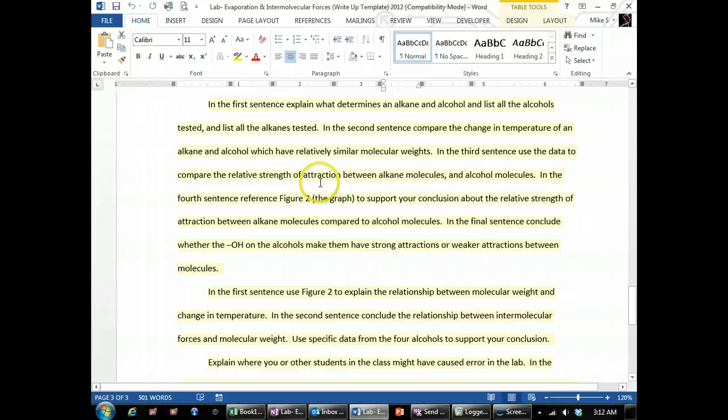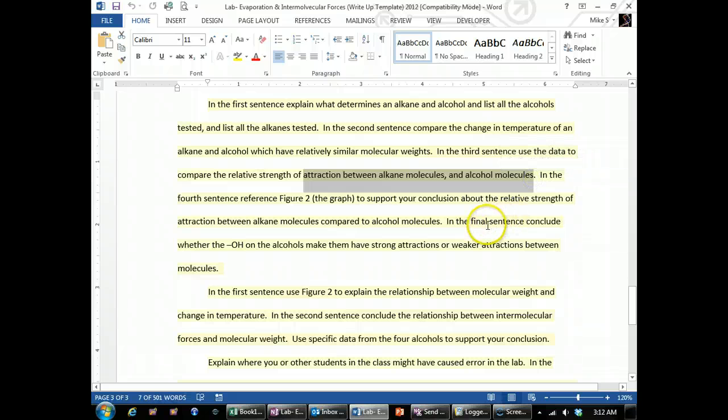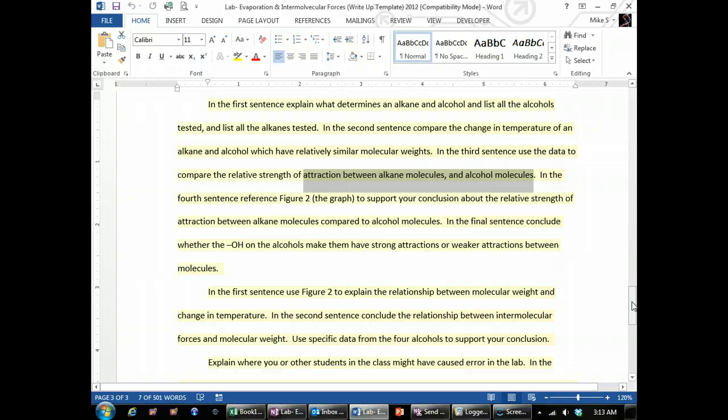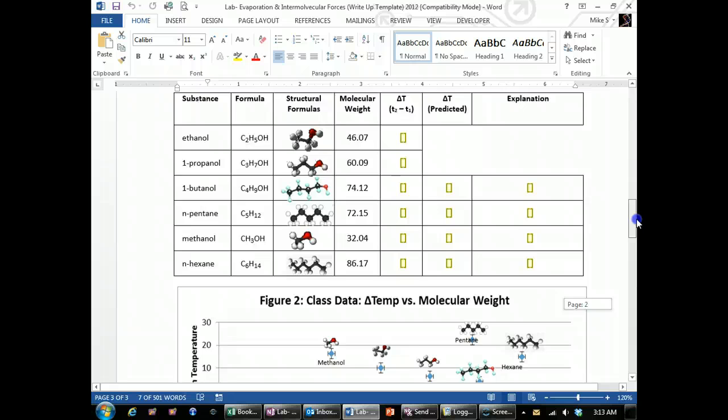Then in the third sentence, that's where you compare the attraction between alkanes and alcohols and reference what the molecules look like. What do you think caused one of those to have more of an attraction? Why does, what's happening at the molecular level? Support your conclusion using the graph up above, right up here. This is the student graph.